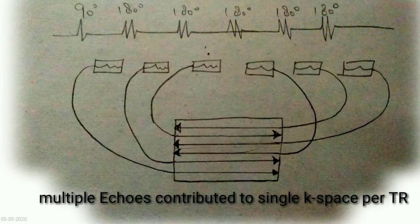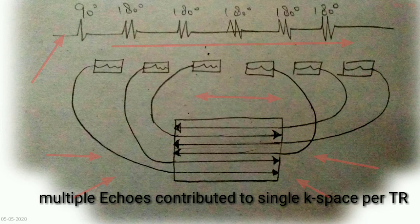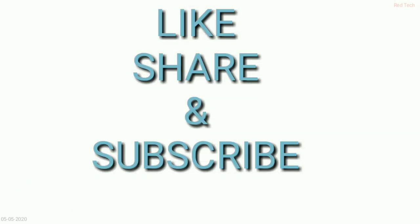Here you can see the diagram showing multiple echoes contributing to a single k-space for one TR. First a 90-degree pulse is applied, followed by multiple 180-degree refocusing pulses. This is all about the turbo spin echo sequence — I hope all the points are clear.